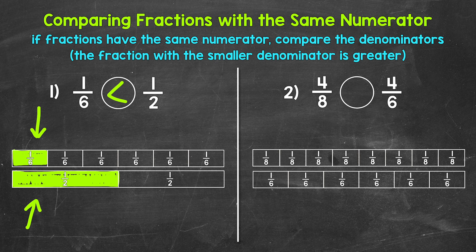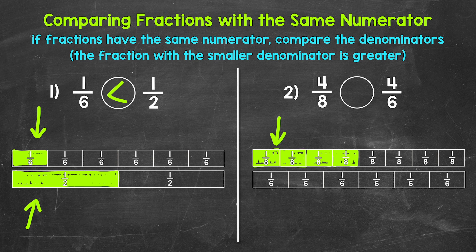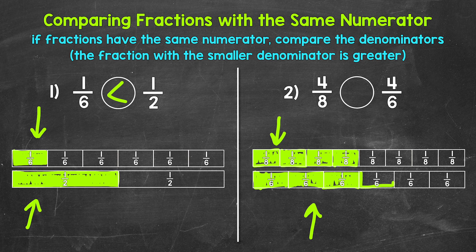The fraction strip divided into six parts will have bigger parts than the fraction strip divided into eight, so four-sixths is going to be greater. Let's show that with these fraction strips — starting with four-eighths: one-eighth, two-eighths, three-eighths, and four-eighths. Now four-sixths: one-sixth, two-sixths, three-sixths, and four-sixths. We can see that four-sixths is greater — more of the fraction strip is shaded in. So our comparison symbol goes like this.